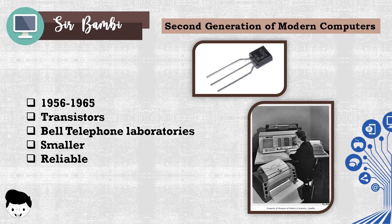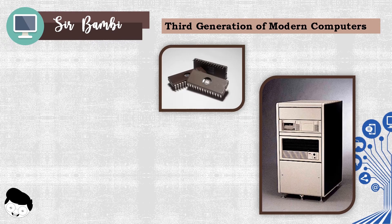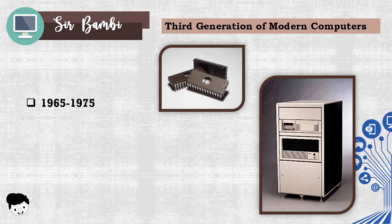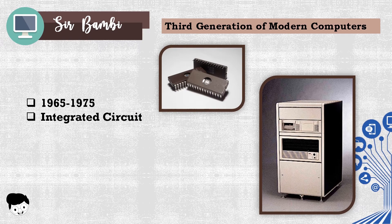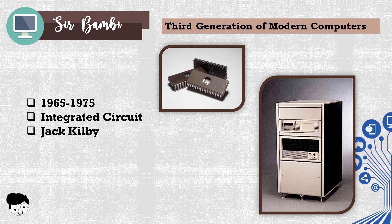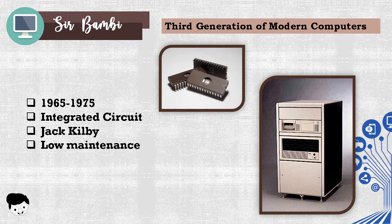Computers were smaller and more reliable as compared to the first generation computers. The third generation of computers were established between 1965 and 1975. Computer machines of the third generation were based on integrated circuit technology. The integrated circuit was developed by Jack Kilby. It is smaller in scale, has low operating costs, and has less power consumption.